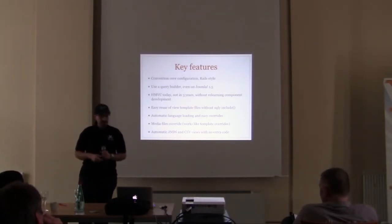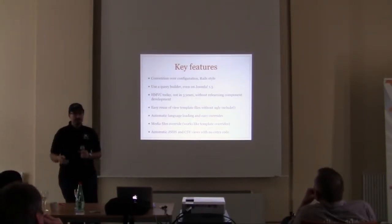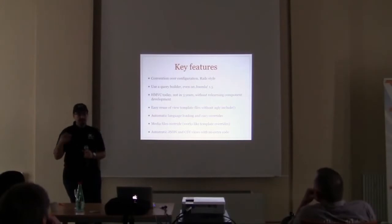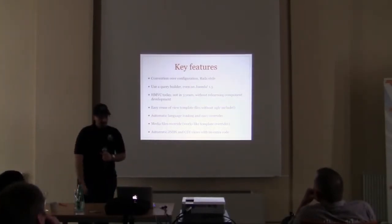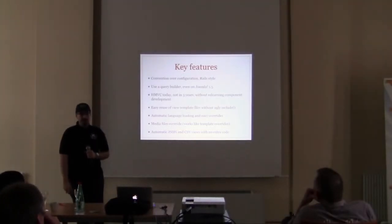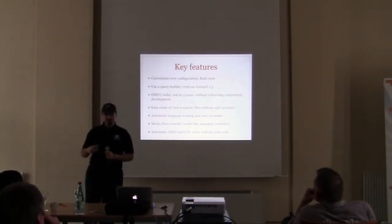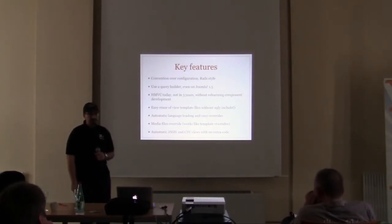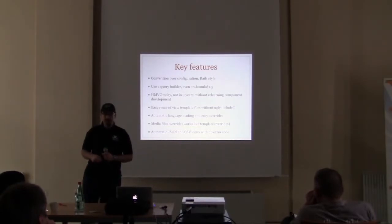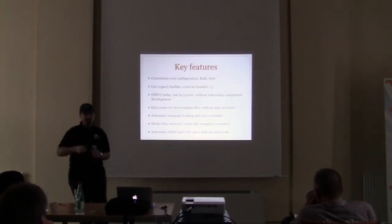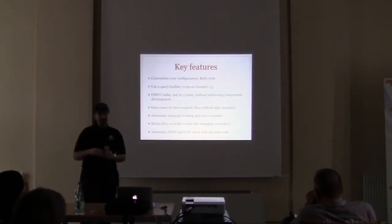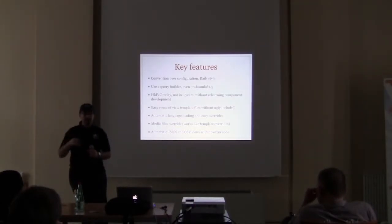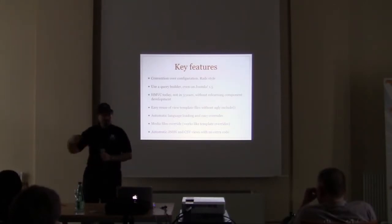You can have HMVC today, even on Joomla 1.5 — this has been implemented since last September. You don't have to wait three years and relearn how to write Joomla software with a new API. You can do it today. You can very easily reuse view template files without doing ugly direct includes that force you to use fixed paths. You can have automatic loading of language files, so you don't have to figure out what happens when your German translator is one version behind and your English base translation has more language strings. It's much better if those untranslated strings fall back to English so at least users know what's going on.